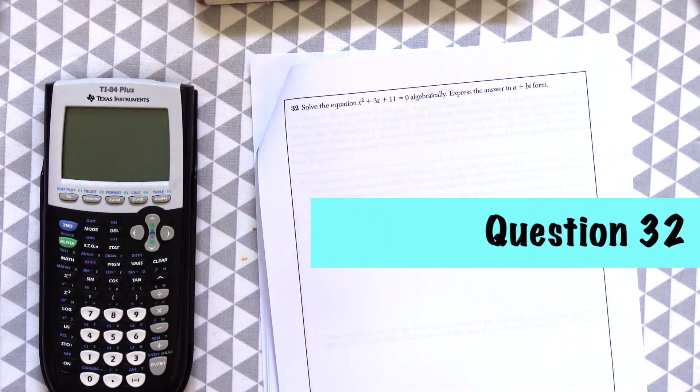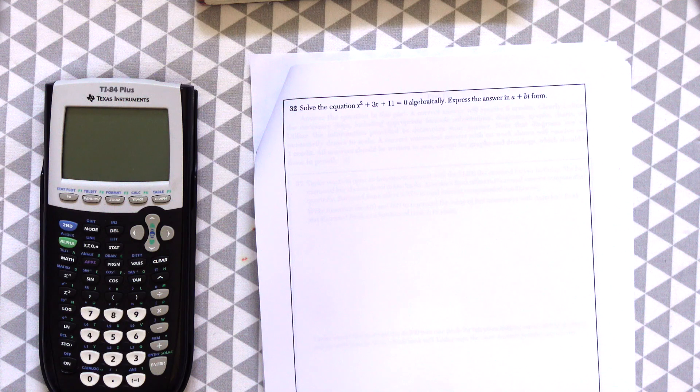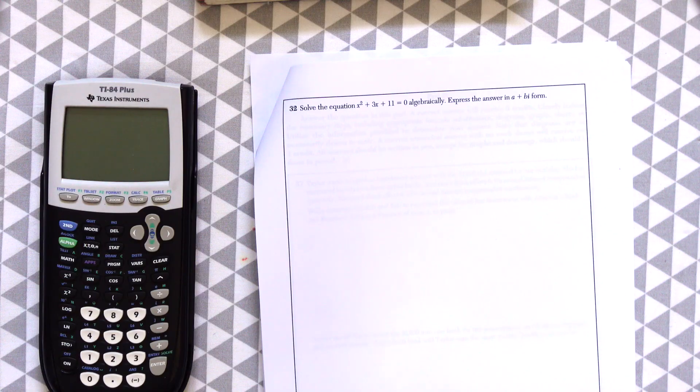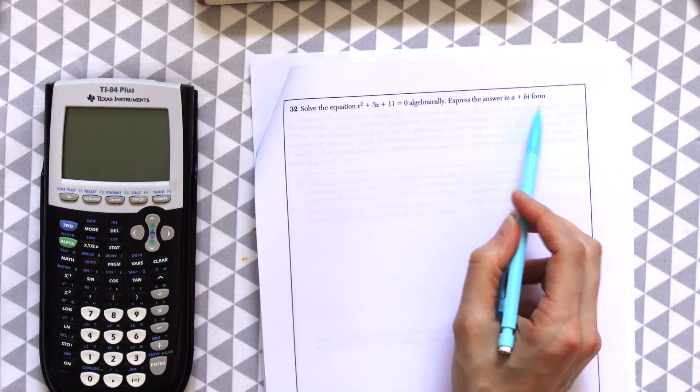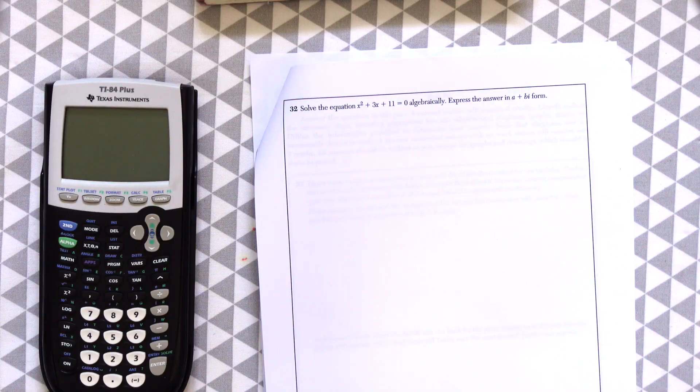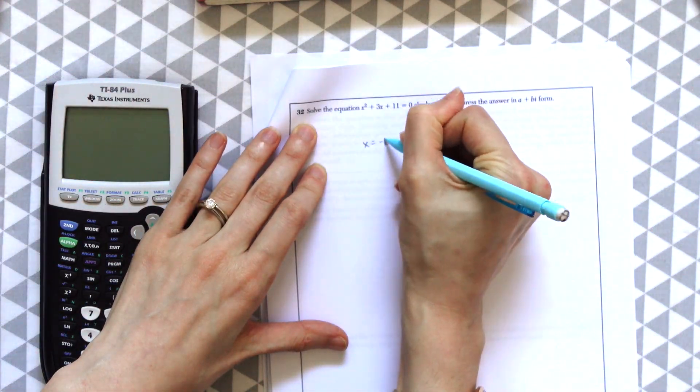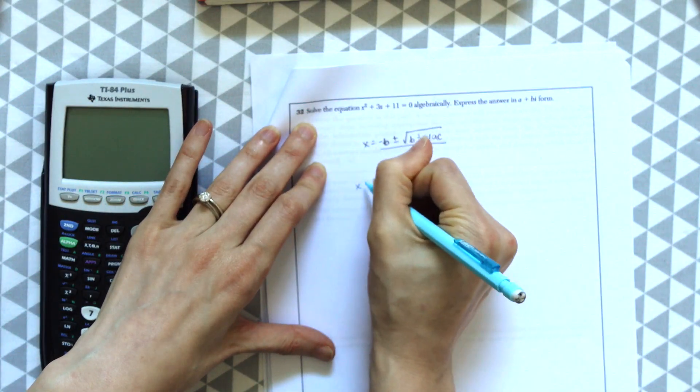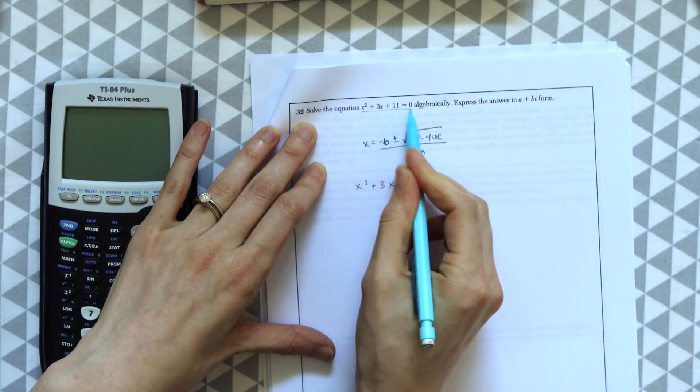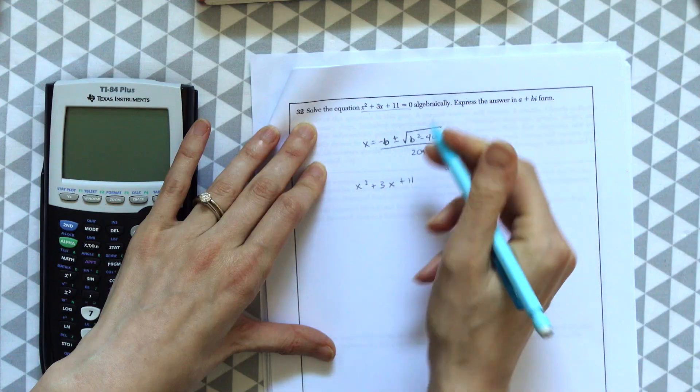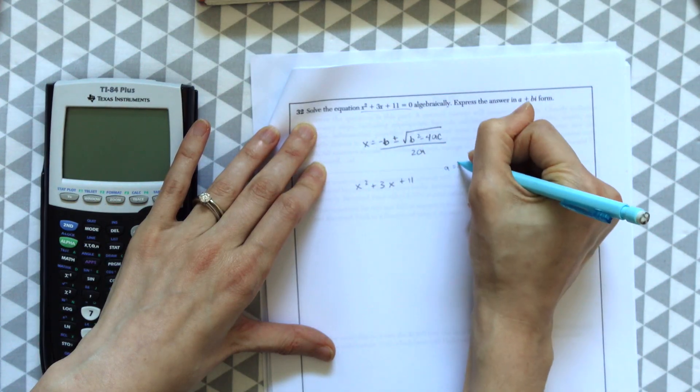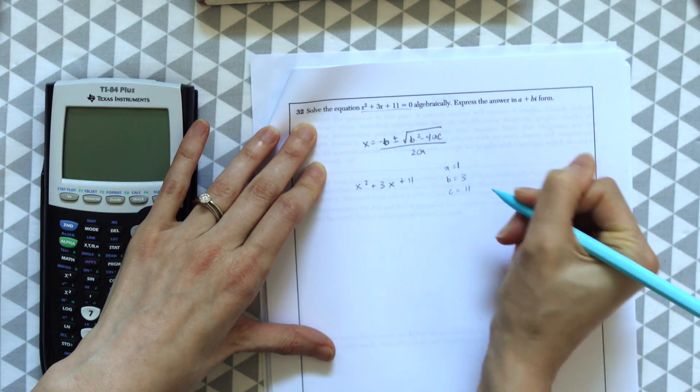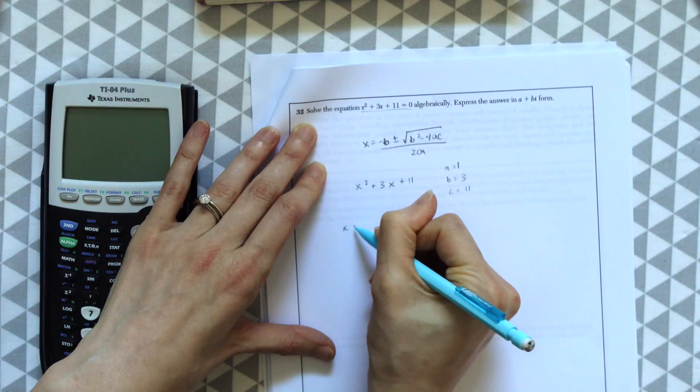Question 32. Solve the equation x squared plus 3x plus 11 equals zero algebraically. Express the answer in a plus bi form. So we have to do this algebraically, and because they gave us this a plus bi form, this is our clue that we're going to be needing the quadratic equation. So this is our equation. And I'm just going to write on the side here what everything equals for this formula: a is equal to 1, b is equal to 3, and c is equal to 11. And now we could plug these numbers into our formula.